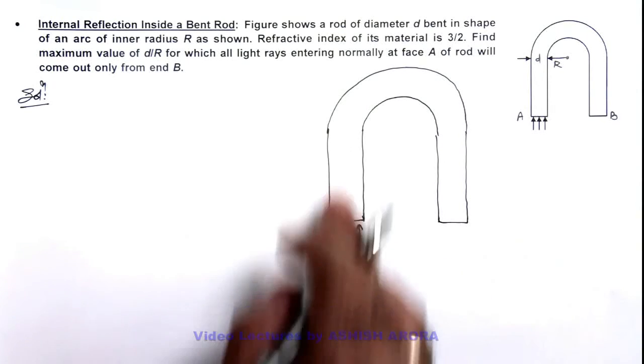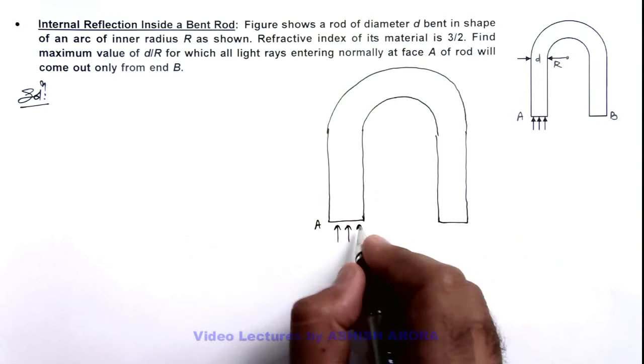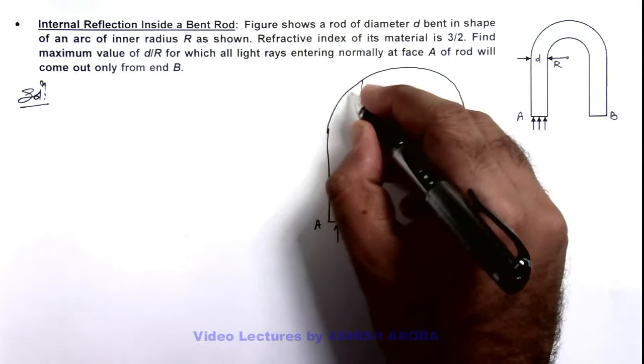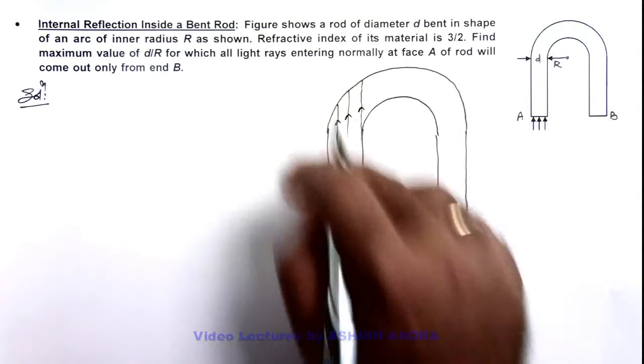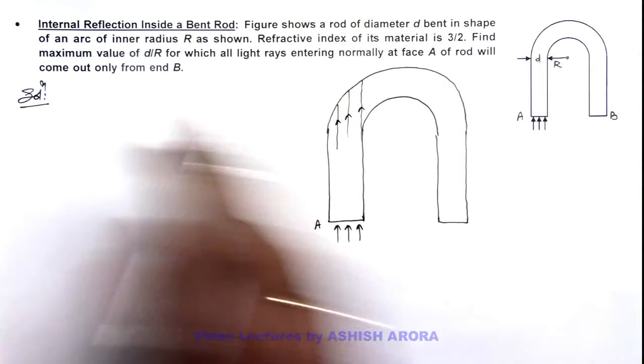So all light rays which are getting into end A, when they are incident on the curved surface of the outer part of the bent rod, must be internally reflected.